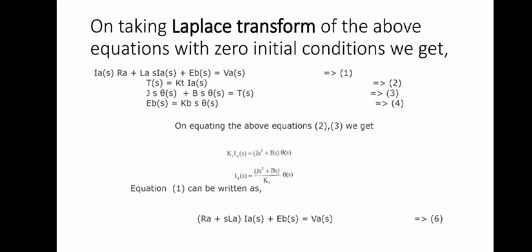The Laplace transform of the mechanical equation gives: J·S²·θ(S) + B·S·θ(S) = T(S). The back EMF in Laplace domain is Eb(S) = KB × S × θ(S).